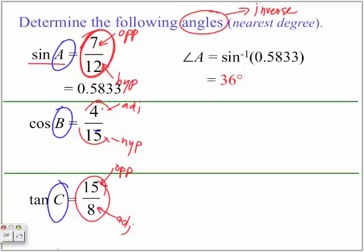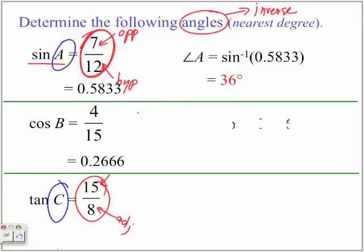So what we're going to do is we're going to divide here 4 divided by 15, and it will give us here 0.2666. So now we're going to take this value, because this now represents our ratio, and our angle B now is equal to the inverse of cosine by 0.2666, and we're going to get an angle of 75 degrees.